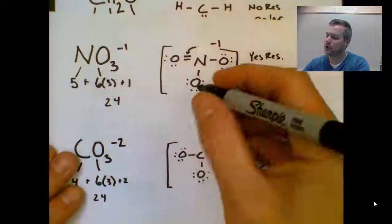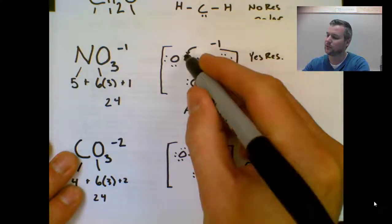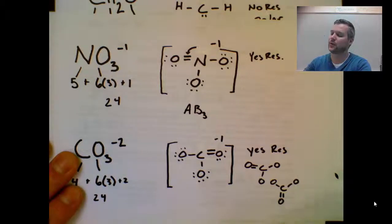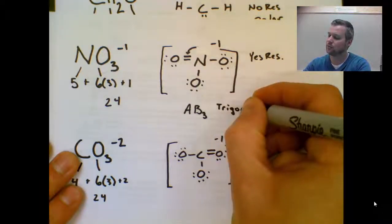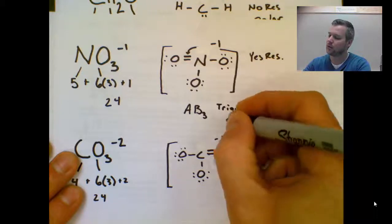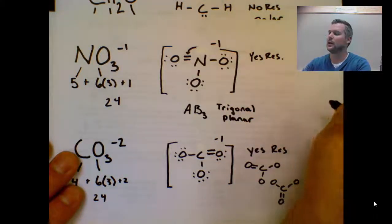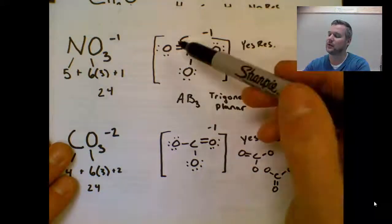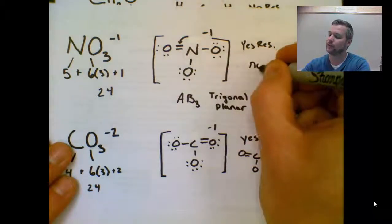NO3 minus 1, A for N. 3 bonds. 3 bonds. A double, a single, a single. No lone pairs. So AB3 is called trigonal planar. Sometimes abbreviated triplanar. Is the central atom 100% surrounded by the exact same item? And the answer to that is yes. Only oxygen, which would make this non-polar.